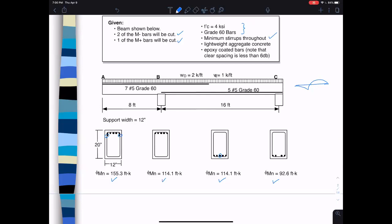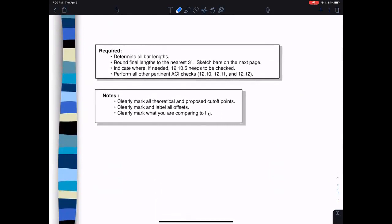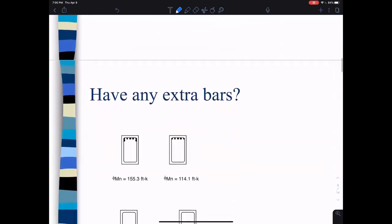They are closely spaced, which will affect the development. What you need to do is determine all bar lengths, round them to the nearest three inches, and check - back then it was 12.10.5, now it's 7.9.3.5 - and all other pertinent ACI practical checks. I want you to clearly mark all theoretical and proposed cutoffs, mark and label all offsets, and clearly mark what you're comparing to the development length.